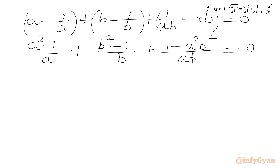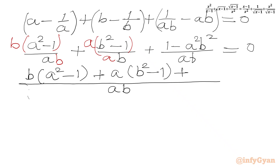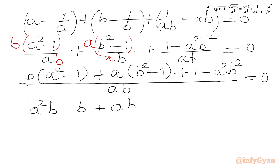Our denominators are different, so we maintain a common denominator of ab. Multiplying through, in the numerator we write b(a² − 1) + a(b² − 1) + (1 − a²b²) = 0. Since a and b cannot be 0, we multiply both sides by ab and expand: a²b − b + ab² − a + 1 − a²b² = 0.